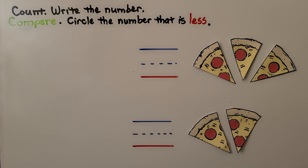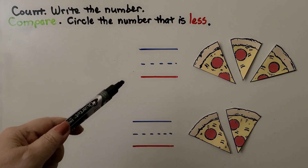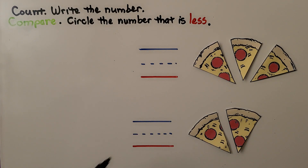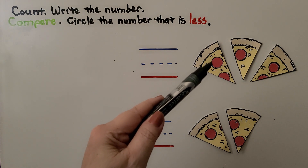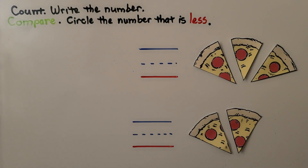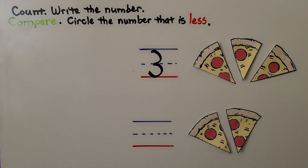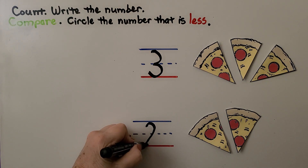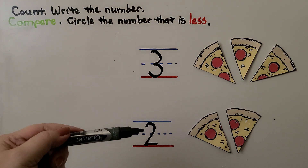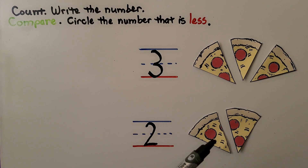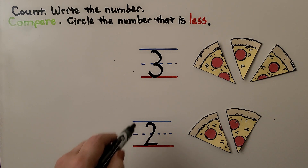Let's try it again. We need to count the slices of pizza, write the number, then compare the numbers and circle the number that is less. In this set, we have one, two, three slices of pizza, and we can write the number three. We count the slices in this set: one, two. When we compare three and two, we can see that there's one more slice here than here. This is less. Two is less than three. We need to circle the number that is less — we circle the two.